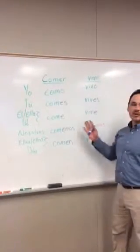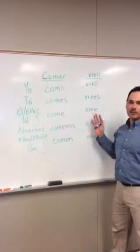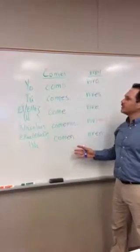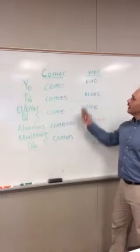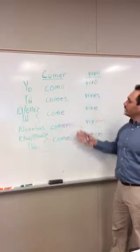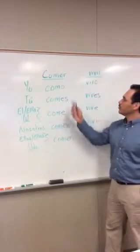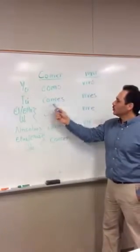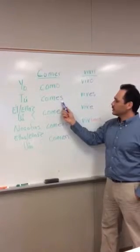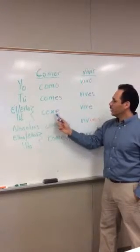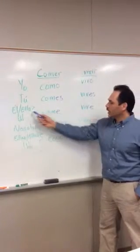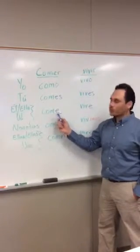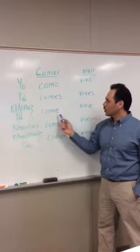Now we're talking about ER and IR verbs, conjugating them in the present tense. Here are the endings. For example, comer would be: yo como, tú comes, él come, ella come, also usted come.